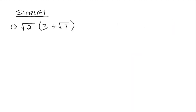Let's expand this out a little bit more. Now we want to simplify. We have the square root of 2 times the quantity 3 plus the square root of 7. We're going to use the distributive property. The square root of 2 is just some number, and we distribute it through the parentheses. The square root of 2 times 3 can only be written as 3 times the square root of 2 — that's not the square root of 6. Then the square root of 2 times the square root of 7 gives the square root of 14.